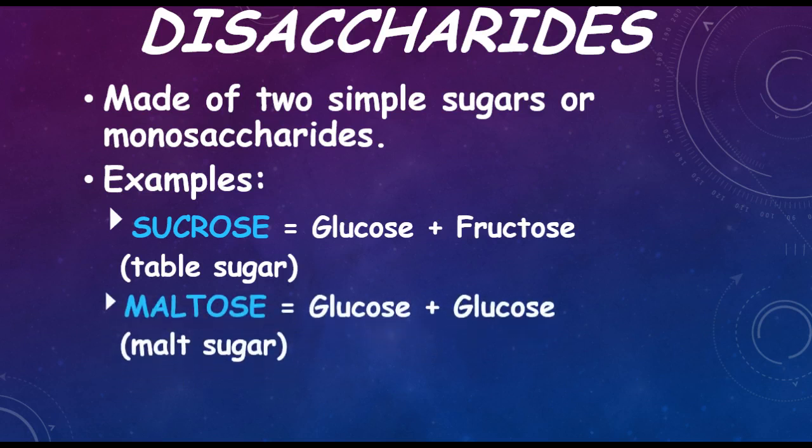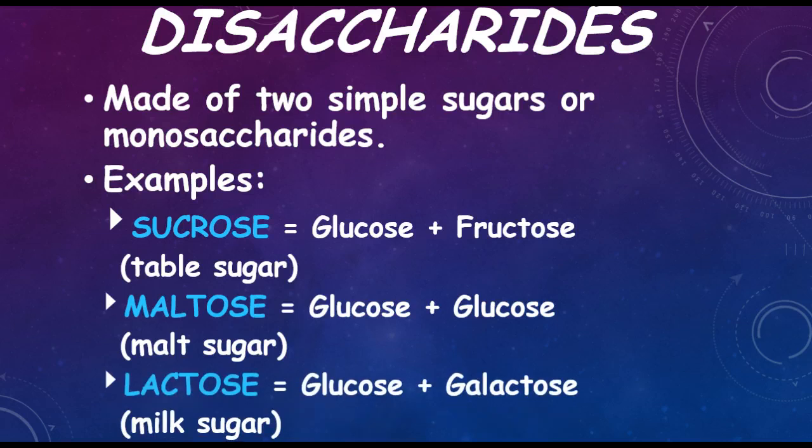Maltose, which is two glucose molecules, which equals malt sugar. Lactose, which is a glucose and a galactose, which makes milk sugar. If you notice, there is at least one glucose molecule in each one of these disaccharides. You will always have at least one glucose molecule.